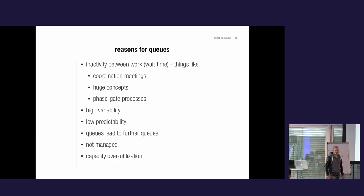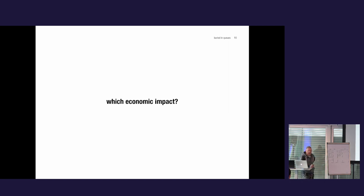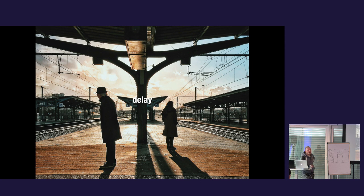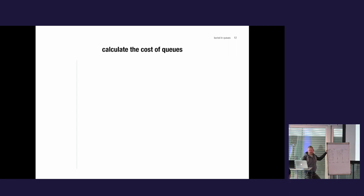One of the reasons queues persist is that they are not managed. It has to do with capacity over-utilization. In order to do something about queues, one thing is to make them visible — to see where they are and how they look. We should know what economic impact they have. The basic economic impact is delay. Traffic jams cost up to 80 billion euros in Germany per year — that must be some hidden cost. And this is also present in your context.